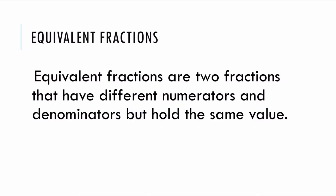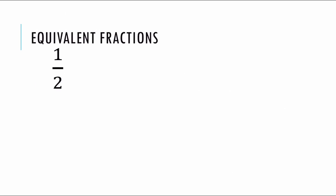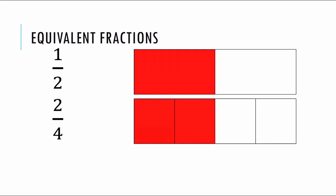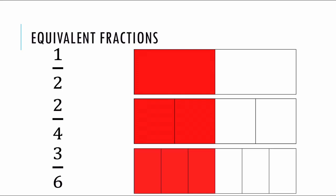So let's start with equivalent fractions. Equivalent fractions are two fractions that have different numerators and denominators but hold the same value. For example, if I show a half here, that is one out of two parts. If I change the numerator and denominator to two over four, this still holds the same value, so they are equivalent fractions. And I can also come up with three over six — again an equivalent fraction. Those three fractions all hold the same value.